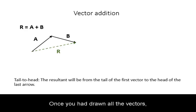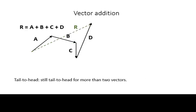Once you have drawn all the vectors, you draw the resultant vector from the tail of the very first vector to the head of the very last vector. You can do this for any number of vectors.